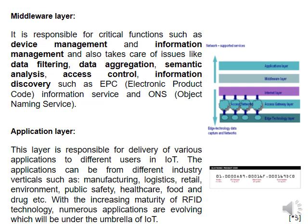The application layer is responsible for delivery of various applications to different users in IoT. Applications can come from different industry verticals such as manufacturing, logistics, retail, environment, and public safety. In business management, the term 'verticals' is used for specific things, while 'horizontal' means generic and involves many other domains.